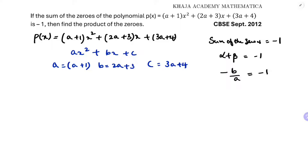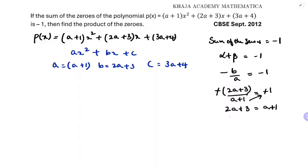Substituting the values: minus of b, which is (2a+3), divided by a, which is (a+1), equals minus 1. Cancelling the negatives and cross-multiplying gives 2a+3 = a+1. Bringing like terms to one side: 2a minus a equals 1 minus 3, so a equals minus 2.